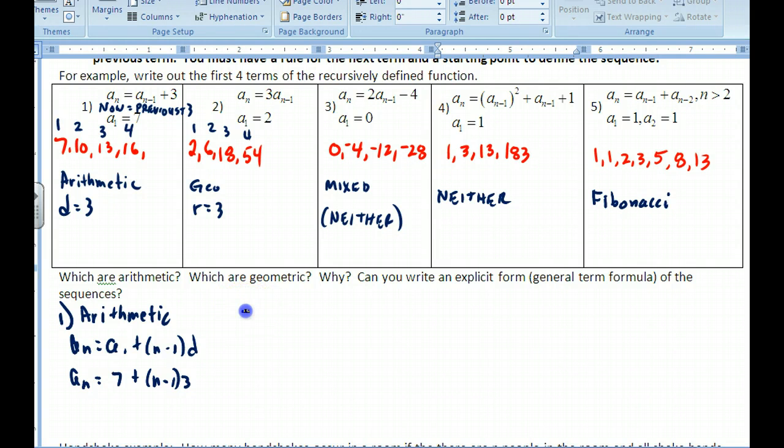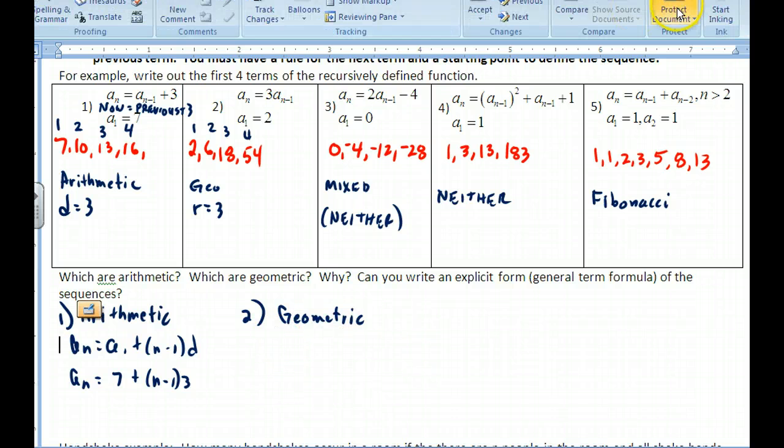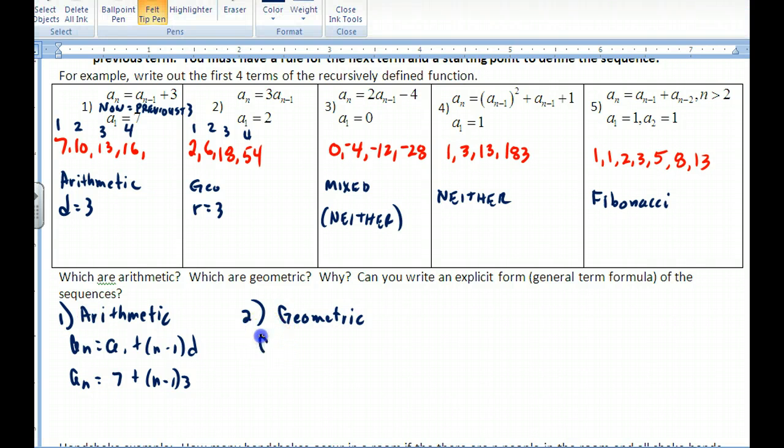Then for the geometric, geometric is number 2. My common ratio is 3. So for a geometric again, we have a_n. Oh, I lost my pen. Just a second. We have a_n = a_1 * r^(n-1). And so a_n here is equal to my first term, which is 2, times my ratio, which is 3 to the n minus 1.